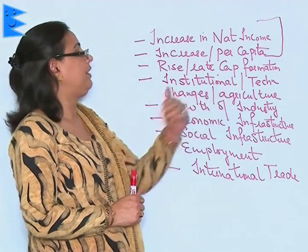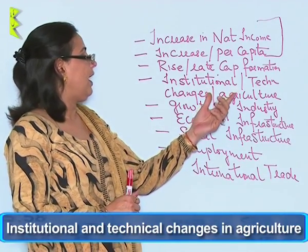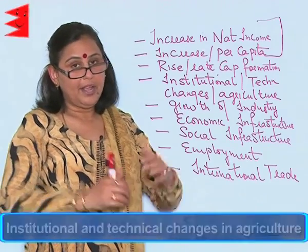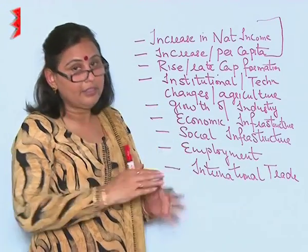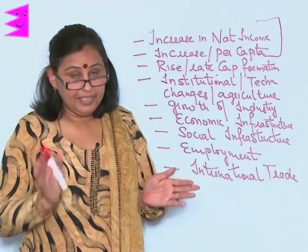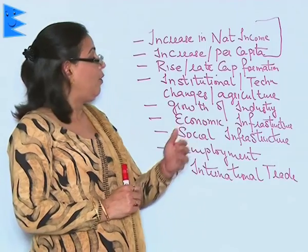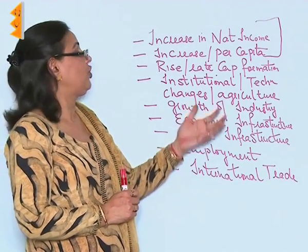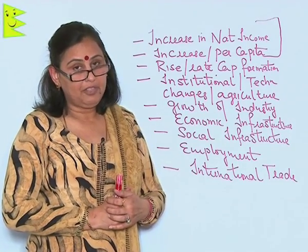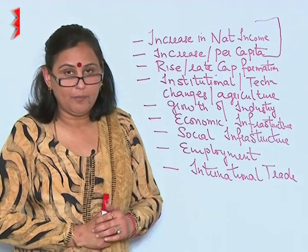The next achievement is institutional and technical changes in agriculture. The land holding ceilings were removed, the intermediaries between the government and the peasants were removed, and all such measures given importance in economic planning have led to a wonderful increase in agricultural production.